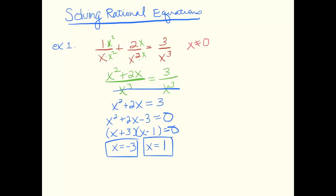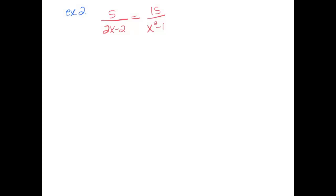Let's try the other example. For our second example, I think it's better that we don't actually make a common denominator for this one. I actually want to cross multiply, so I would get 30x minus 30 equals 5x squared minus 5. And here I have this quadratic. I'm going to set that equal to 0, so 5x squared minus 30x plus 25 equals 0.